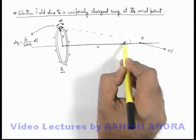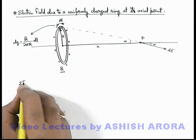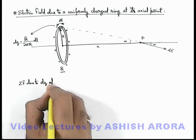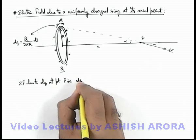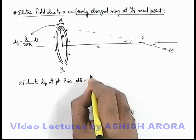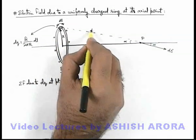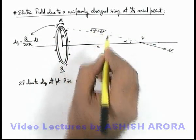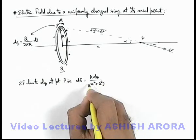This dE makes angle alpha with the direction of the axis. The electric field due to dq at point p is dE = k·dq / (x² + r²), since the distance from the element to point p is √(x² + r²), so dE = k·dq / (x² + r²).